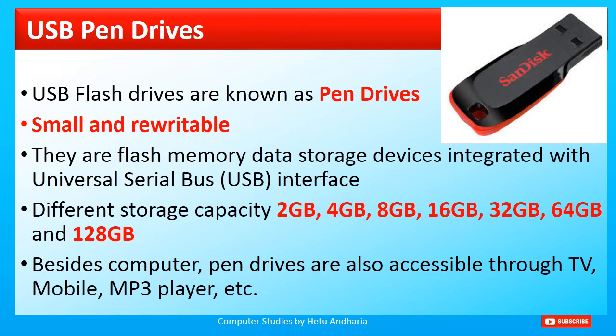The last secondary storage device — which should perhaps be the first according to most students — is the USB pen drive. USB flash drives are small and rewritable flash memory data storage devices integrated with a USB (Universal Serial Bus) interface. The different storage capacities of a pen drive are 2 GB, 4 GB, 8 GB, 16 GB, 32 GB, 64 GB, or even up to 128 GB. Besides computers, pen drives are also accessible through TV, mobile, and MP3 players.